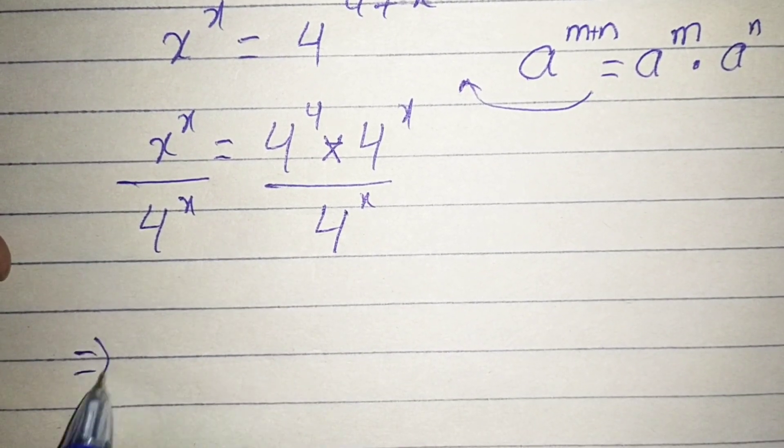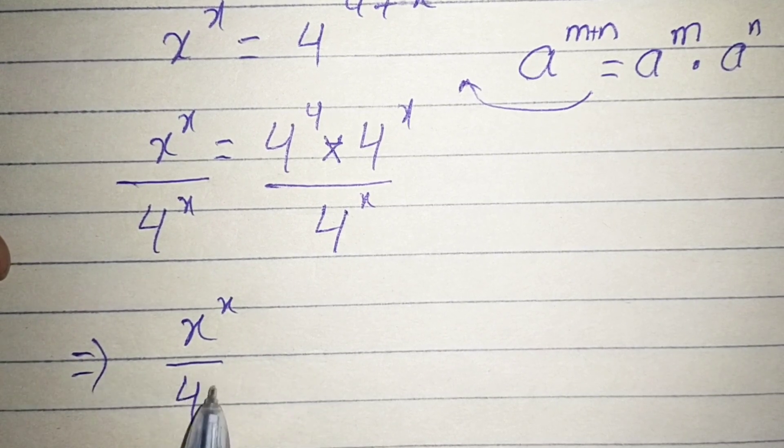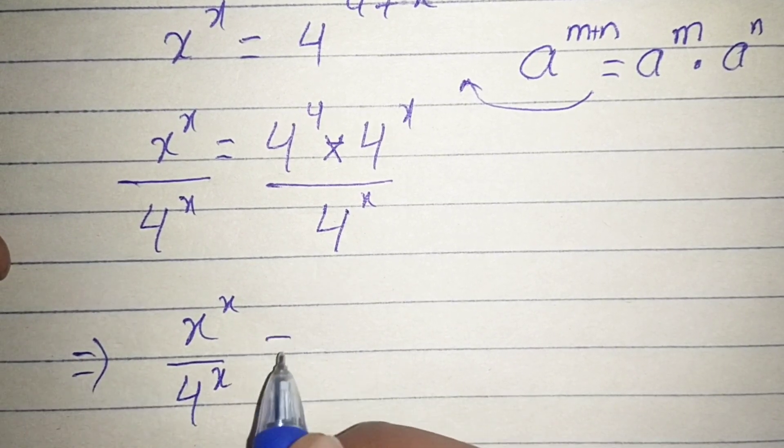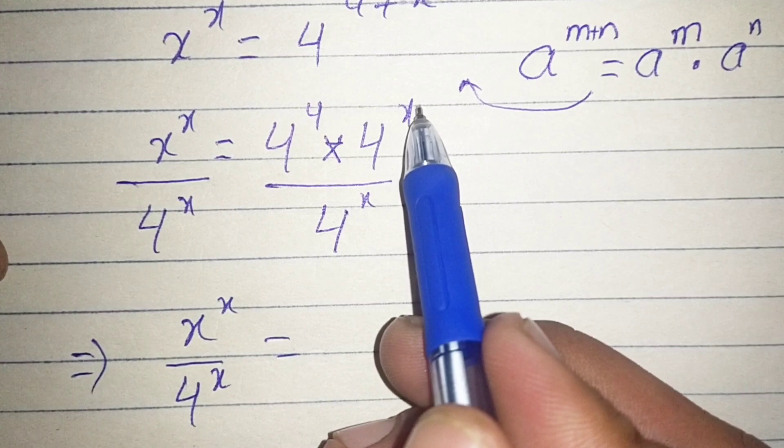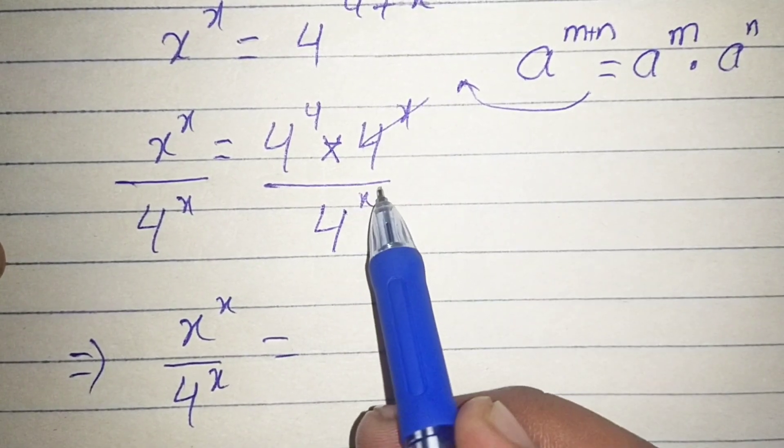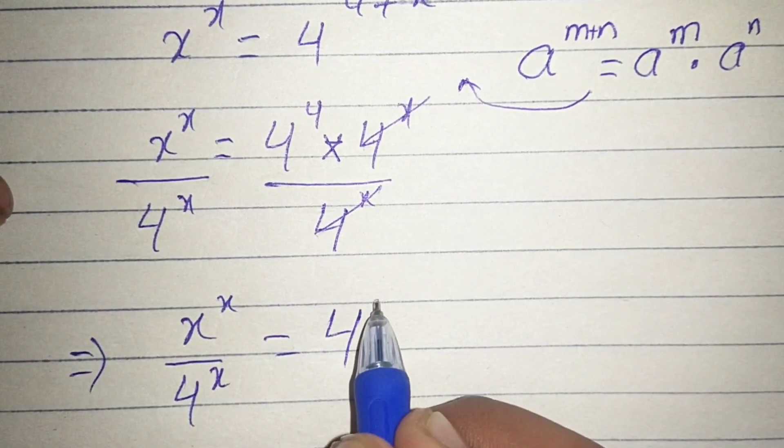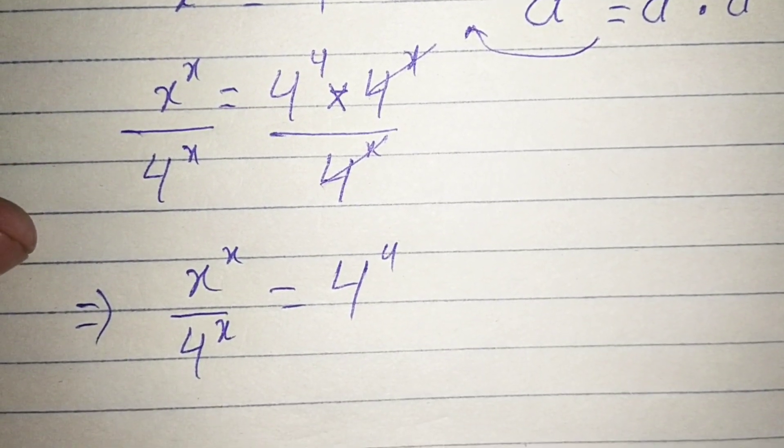It applies that x to the power x divided by 4 to the power x equals, the 4 to the power x in the denominator will be cancelled with the numerator, so we have 4 to the power 4 here.